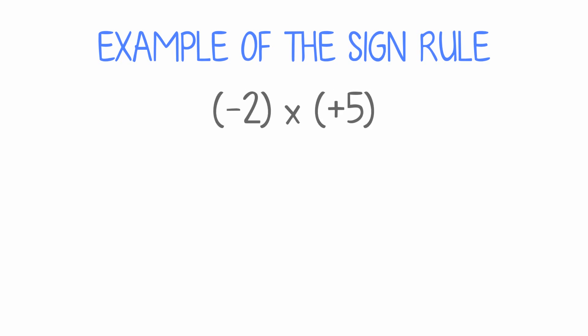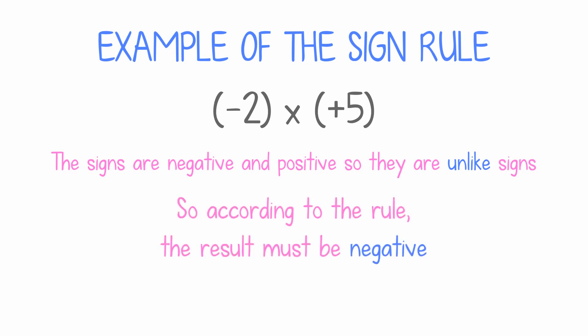Here's an example of the sign rule. The signs are negative and positive, so they are unlike signs. So according to the rule, the result must be negative.